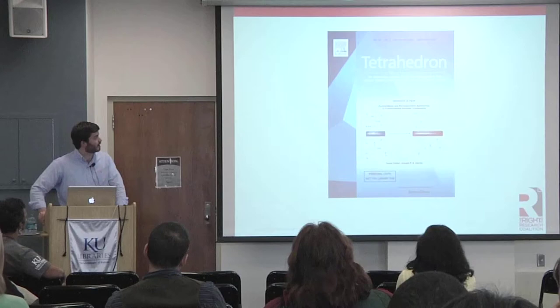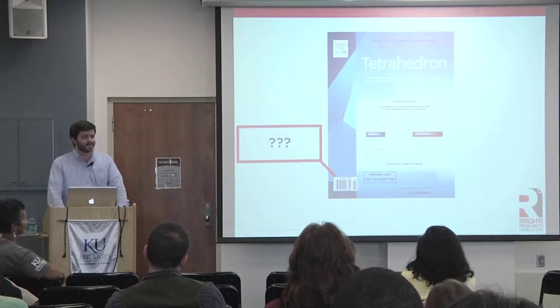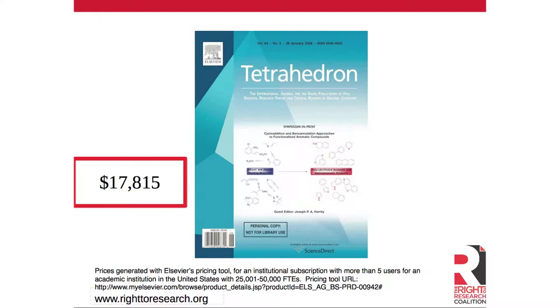This is an example of one of the things you might be trying to get access to — the journal Tetrahedron, which is an organic chemistry journal published by Elsevier. Unfortunately, academic journals don't come with price tags on them. Does anybody want to take a guess what an institution of KU's size in the US might pay per year for an institutional site license for this journal? The answer is about $17,800, which is pretty expensive for a one-year subscription.